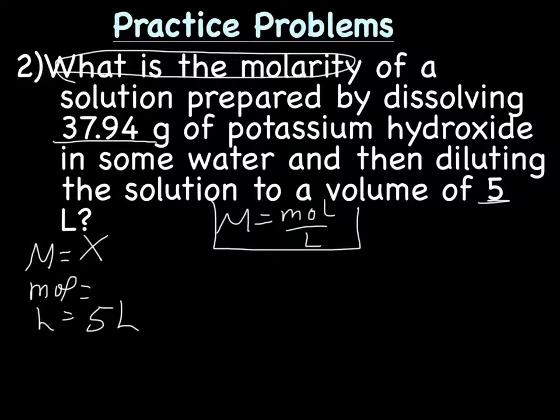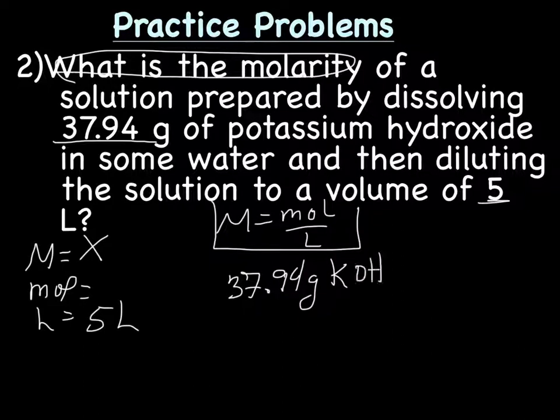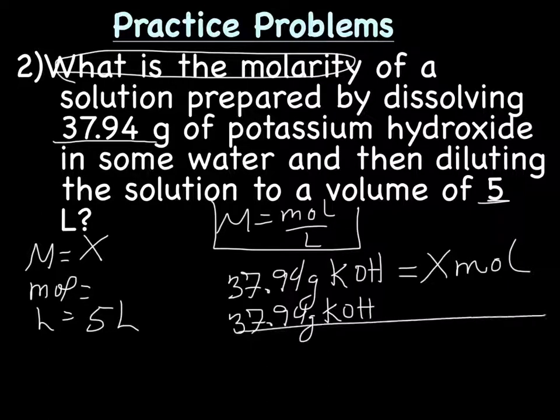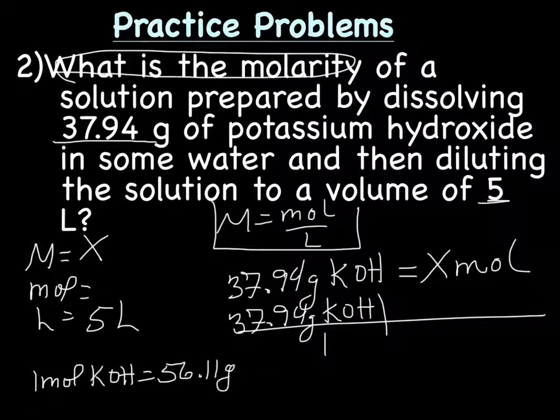Well, we could convert 37.94 grams potassium hydroxide, and what do we want that to be? We want it to be moles. This is where we set up our grid: 37.94 grams KOH over one. And we're going to use the equality, one mol KOH equals the molar mass of KOH, which we get off the periodic table. So we're going to add the molar mass of one potassium, one oxygen, and one hydrogen. And I got 56.11 grams KOH.